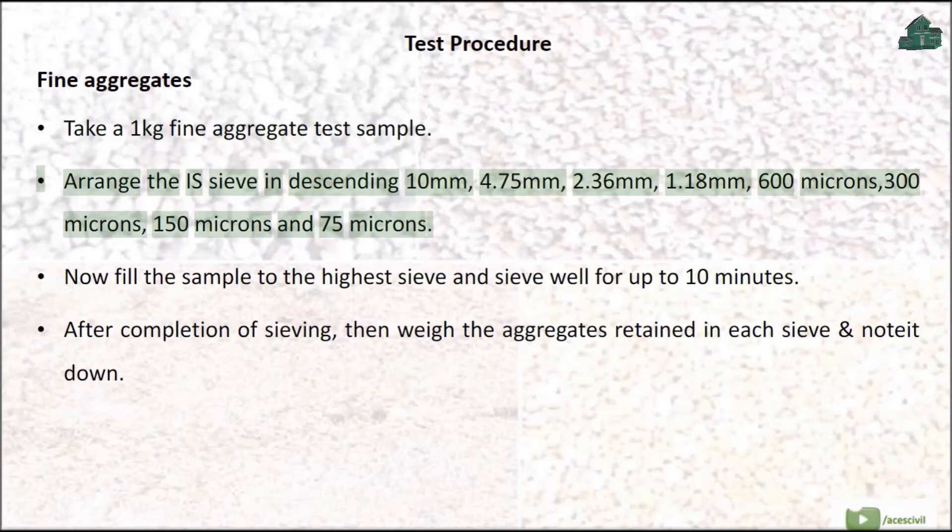Test Procedure - Fine Aggregates: Take a 1 kg fine aggregate test sample. Arrange the IS sieve in descending order: 10 mm, 4.75 mm, 2.36 mm, 1.18 mm, 600 microns, 300 microns, 150 microns, and 75 microns.